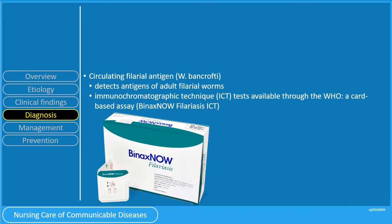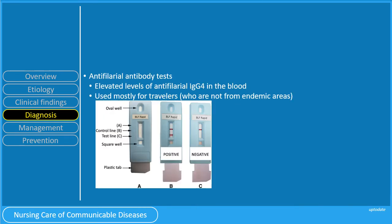Another test involves antigen detection of adult filarial worms, used only for W. bancrofti. Immunochromatographic technique or ICT tests are available through the WHO. A card-based assay known as BinaxNOW filariasis ICT can be used anytime — in contrast to PBS — because it detects antigens. Antifilarial antibody tests can also be done, showing elevated levels of antifilarial IgG4 in the blood.